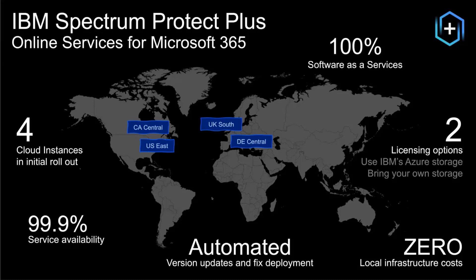The service comes with two different license options. The first option lets the customer use IBM-provided storage, which is Azure blob storage, as a backup target — meaning the customer needs no local infrastructure or storage and can use the IBM-provided service and storage entirely. The second option is bring your own storage, where the customer may already have their own AWS or Azure storage and can use that online storage as a backup target. Besides AWS and Azure, there is also the possibility to use on-premises storage like FTP. Both license options are handled on a per-user-per-month basis and can be purchased on a one-, two-, or three-year term.